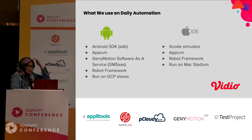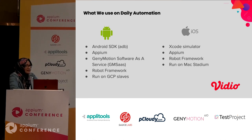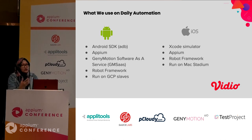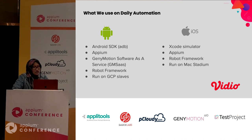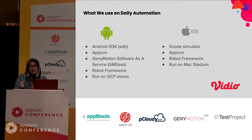These are the tools we use for daily automation on the Android application. We use Android SDK, specifically ADB. We also use Appium and GM SaaS — Genimotion Software as a Service. For the tests, we use Robot Framework, running on a GCP slave. For iOS testing, we use the simulator from Xcode, with Appium and Robot Framework. The Xcode simulator is run on Mac Stadium, which is like a virtual machine for iOS.